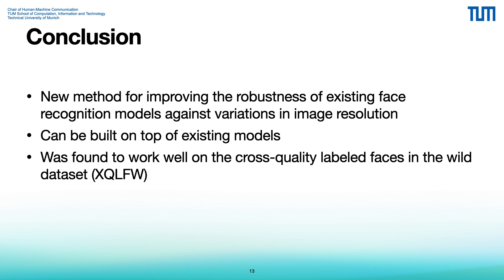In conclusion, our paper presents a new method for improving the robustness of existing face recognition models against variations in image resolution. The method involves applying four triplet loss terms simultaneously to high resolution and low resolution images, and can be built on top of existing models without significant loss of performance on high resolution images. The method works well on the cross-quality labeled faces in the wild (XQFW) dataset and is universally applicable to other popular datasets. An ablation study showed that all four triplet loss terms are necessary for superior performance, and that the choice of distance metric and feature normalization is less critical.